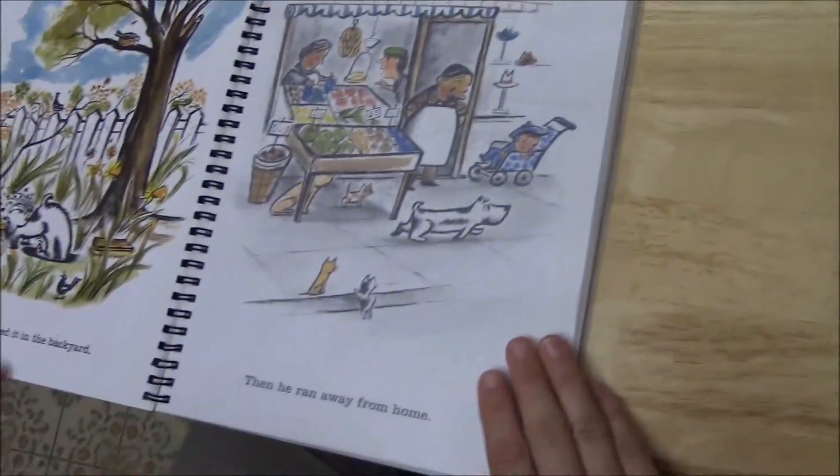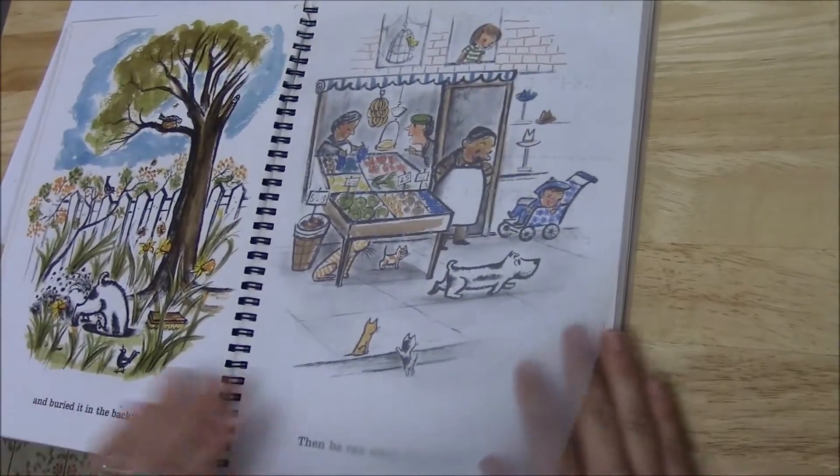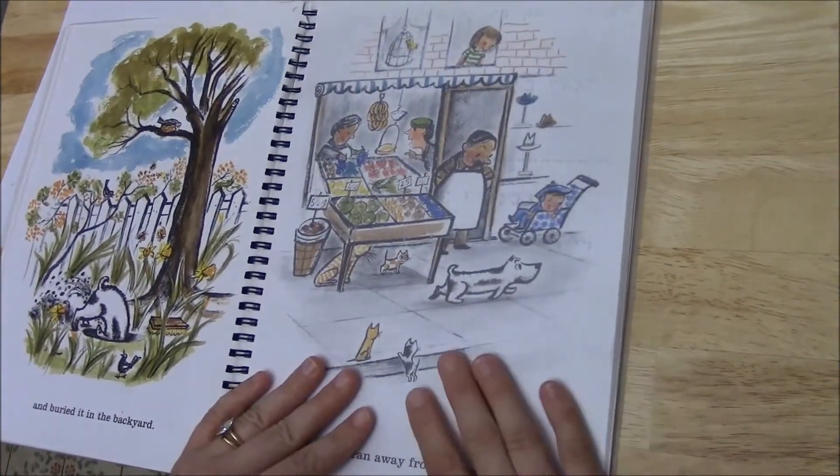You can see that the print is there. It's just like a regular kid's book, but they added a clear sheet of Braille.